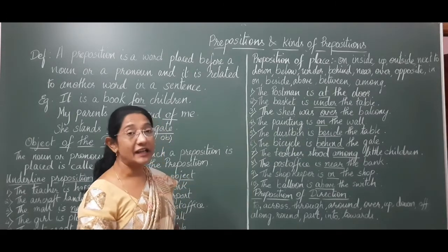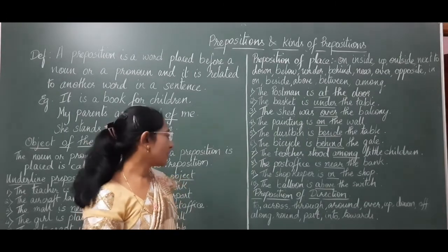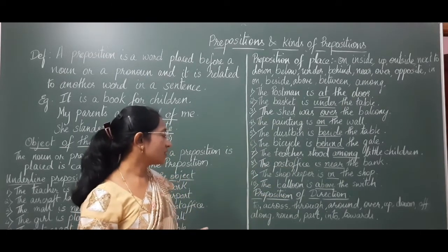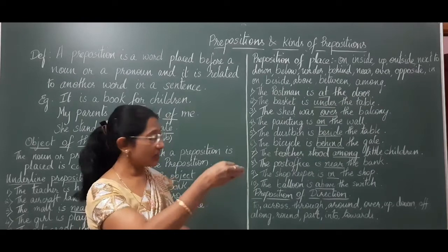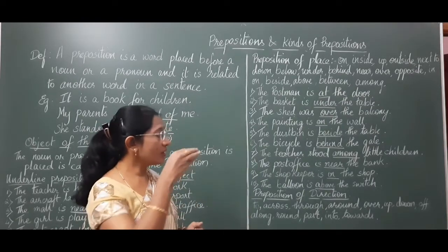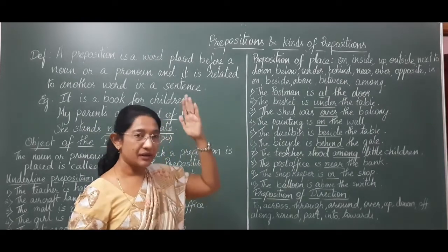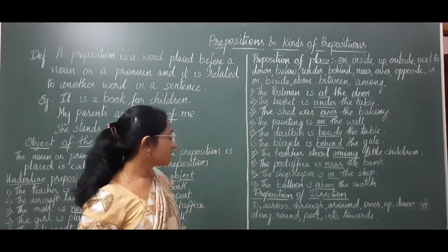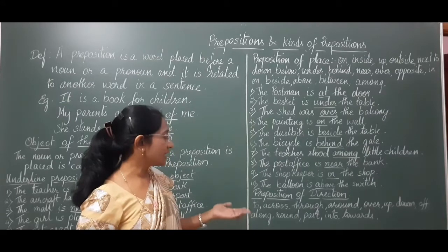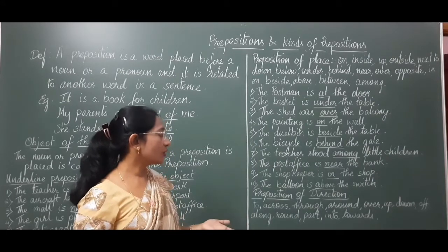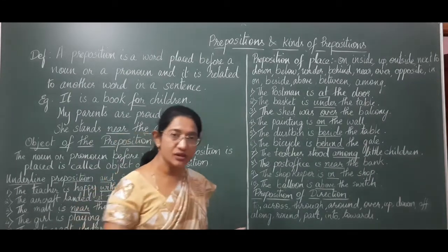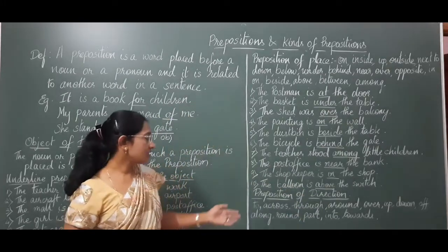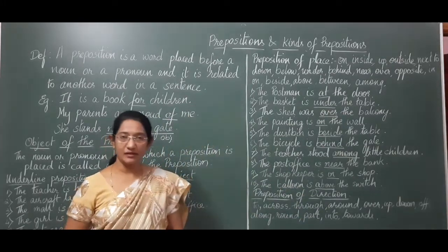Preposition of direction is the next kind. Words like to, across, through, around, over, up, down, off, along, past, into, towards — words which show movement or direction tell about preposition of direction.